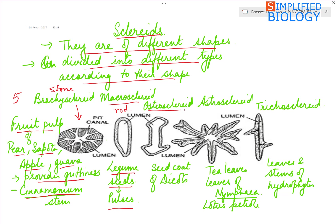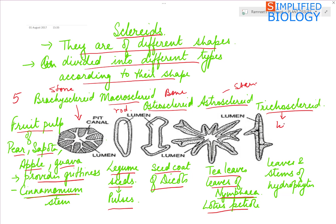Third, Osteosclerids — as the name shows, they are bone-shaped — found in the seed coats of dicots. Fourth, Asterosclerids are star-shaped, found in tea leaves and in the leaves of Nymphaea, that is water lily, and in the petiole of lotus. And last, Trichosclerids, which are hair-like and sometimes branched, found in the leaves and stems of hydrophytes.